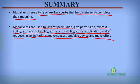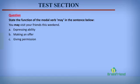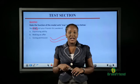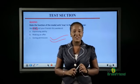Now let's go to our test section. The question says: state the function of the modal verb may in the sentence — You may visit your friends this weekend. Is it A, expressing ability? B, making an offer? Or C, giving permission? The correct answer is C — giving permission. When you give permission to someone, you are granting that person's request or wish, and we use the modal verb may. Thank you for watching and see you next time.